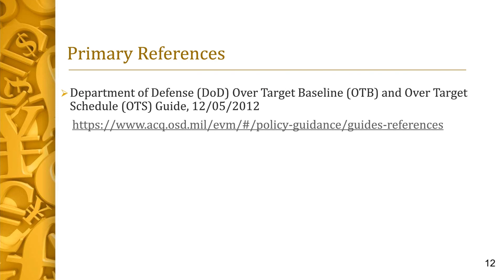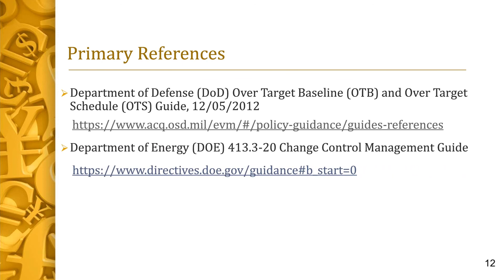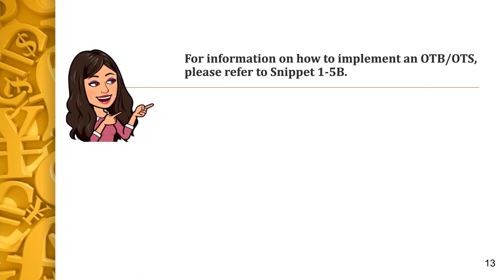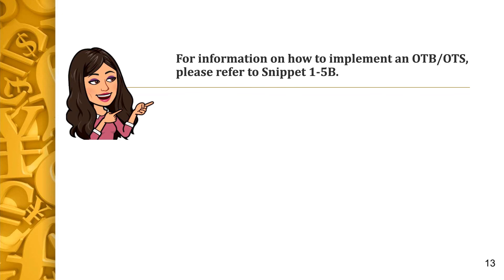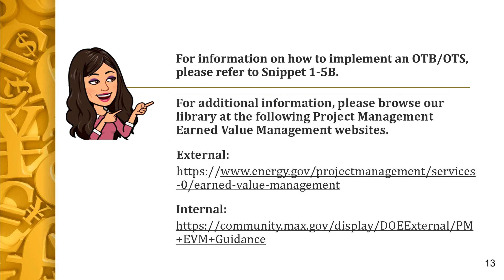There are two primary references for this snippet. DOE follows the Department of Defense's approach to over-target baselines and over-target schedules as stated in the OTB and OTS Guide, dated 12.05.2012, issued by the Department of Defense. The second reference is DOE's 413.3-20 Change Control Management Guide, which provides information regarding OTB and OTS in terms of modifications necessary to maintain contract alignment with the project. Now that we understand why an over-target baseline or over-target schedule may be necessary, refer to snippet 1-5b entitled How to Implement an OTB and/or OTS. For additional information relative to EVMS procedures, templates, helpful references, more snippets, and training materials, please refer to DOE-PM's external EVM homepage or the internal max.gov PM library. Check back periodically for updated or new information. Thank you for using the snippet library.